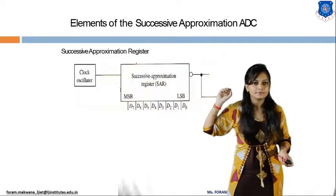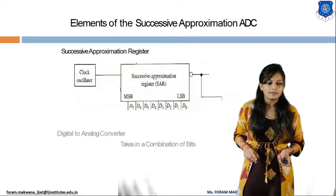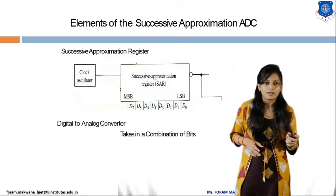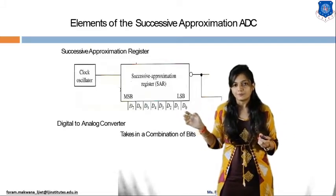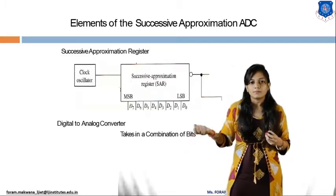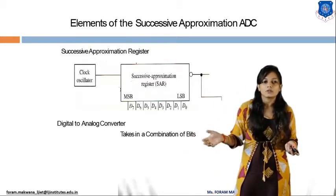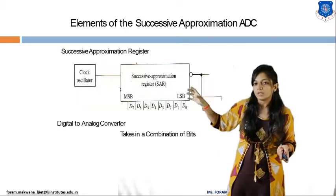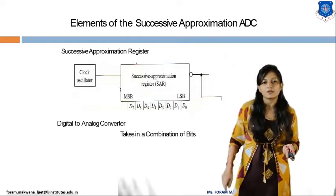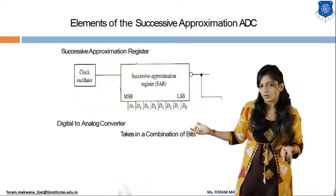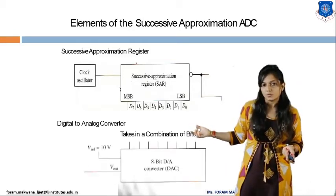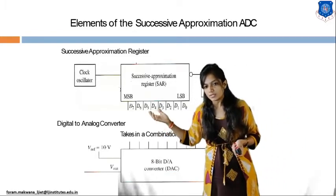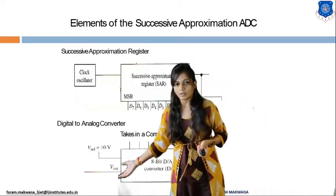A clock oscillator is used, and we compare that digital output by converting it from digital to analog using a digital-to-analog converter (DAC). We compare the analog output to the reference analog signal. A digital-to-analog converter converts the digital input into an analog output.